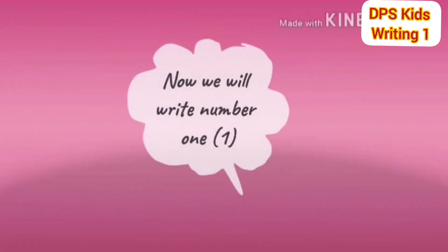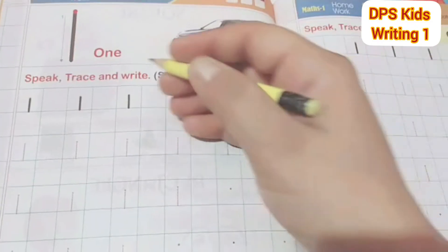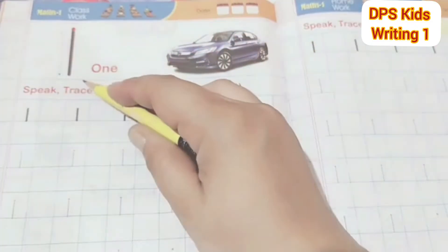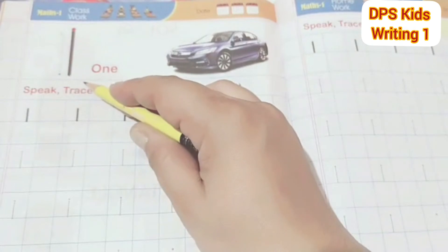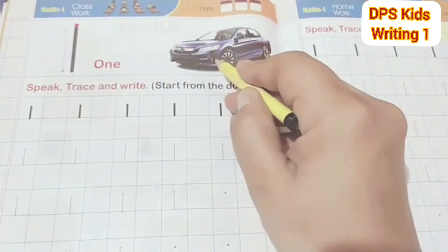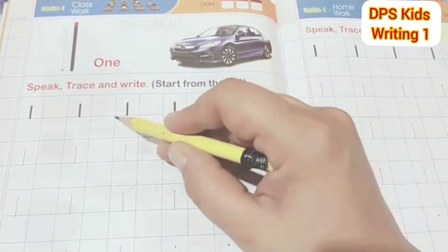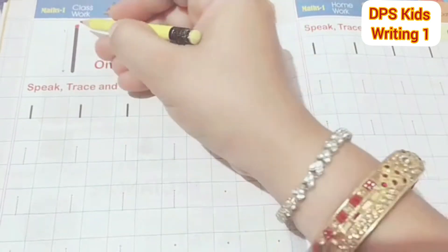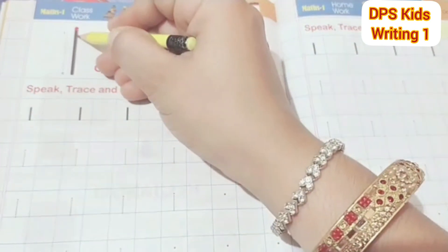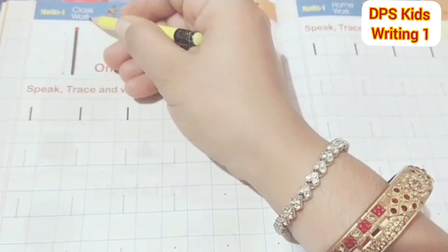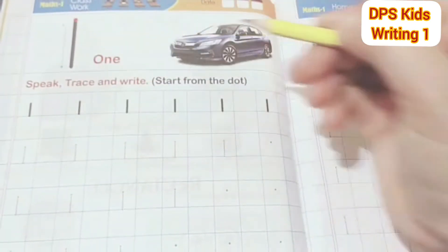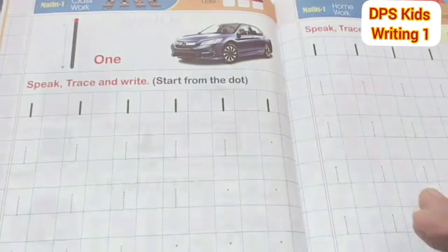Now we will write number 1. This is number 1. One car. Number 1 looks like a standing line. Standing line.